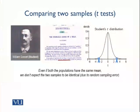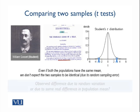The basic idea is that even if two samples are taken from populations having the same mean, the samples would still differ due to random variation from the sampling process. We do not expect every sample to be identical to every other sample. The question is: if we observe some differences between two samples, is the difference due to random variation, or is it due to some real difference in the populations from which these samples are drawn?